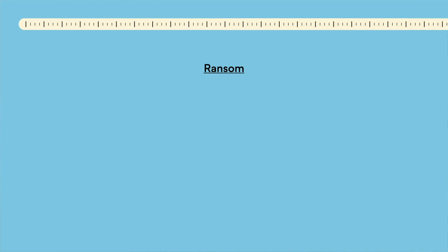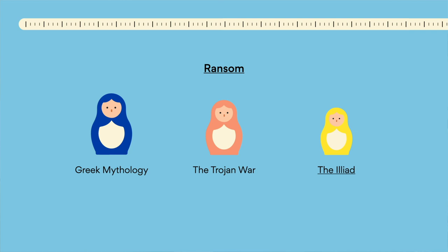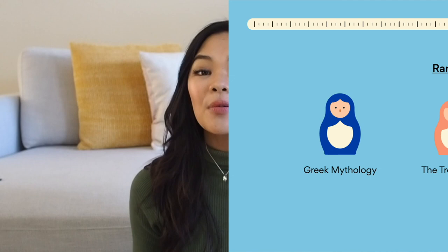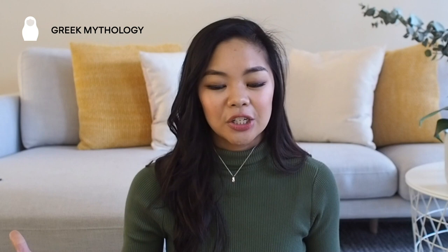Let's look at Ransom. Moving back a further 3,000 years earlier than The Queen, Ransom is a retelling of the Trojan War, one of the most famous events in Greek mythology. To truly understand Ransom, you must familiarize yourself with Greek mythology, the Trojan War, and the Iliad. We'll look at these three as if they're babushka dolls, where dolls of decreasing size are placed inside one another. We'll start with the biggest doll — Greek mythology — because it's the umbrella knowledge you need before being able to understand the Trojan War and the Iliad.